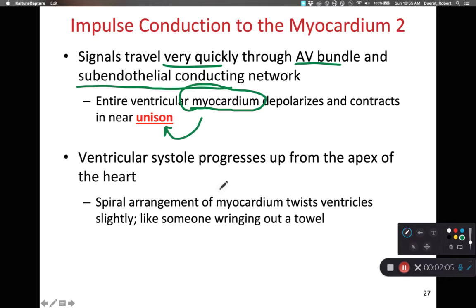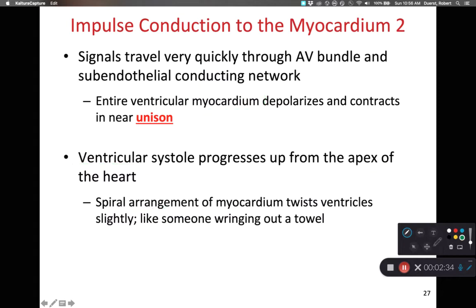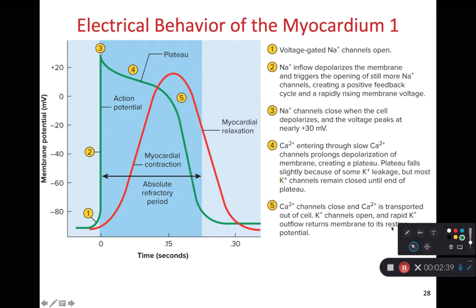Systole means contraction; diastole means relaxation. When we look at ventricular systole, it starts at the apex of the heart and then moves upward. The spiral arrangement of the cardiomyocytes causes the ventricles to twist, like wringing water out of a dish towel — in this case, we're wringing the blood out of the heart. This helps to maximize the amount of blood output.